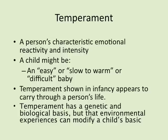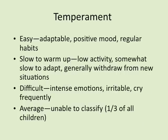Temperament has a genetic and biological basis, but environmental experiences can modify a child's basic temperament. That's the nature-nurture dynamic. The three main temperament types are: easy — adaptable, positive mood, regular habits; slow to warm up — low activity, somewhat slow to adapt, generally withdraws from new situations; and difficult — intense emotions, irritable, cries frequently.